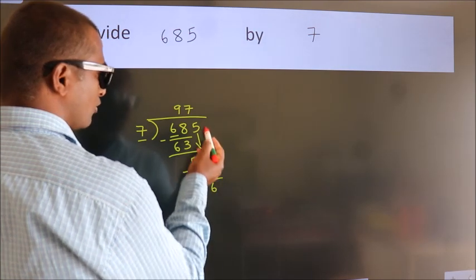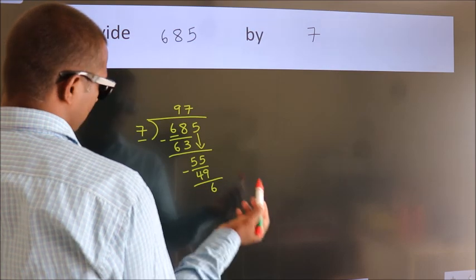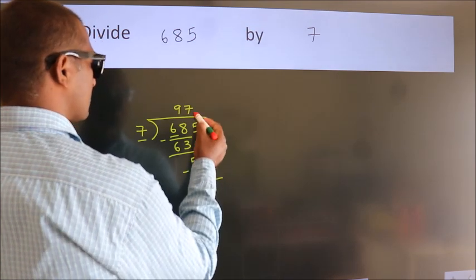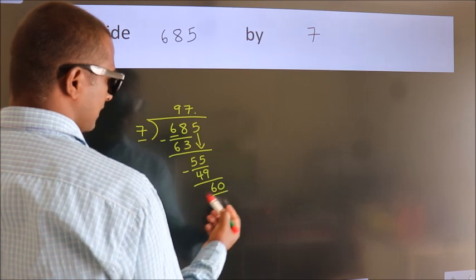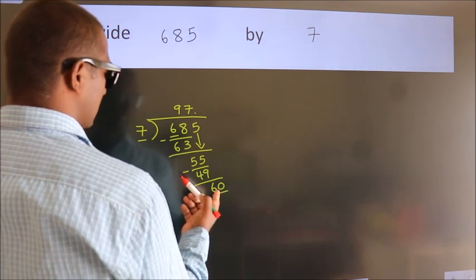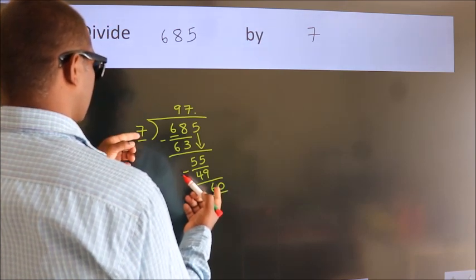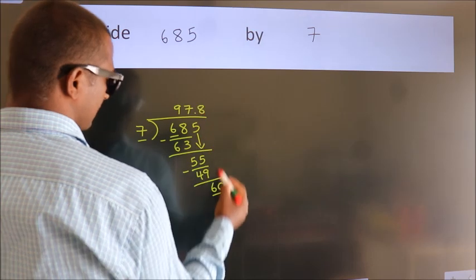After this, no more numbers to bring down. So what we do is, we put a dot and take 0. So, 60. A number close to 60 in the 7 table is 7 eights, 56.